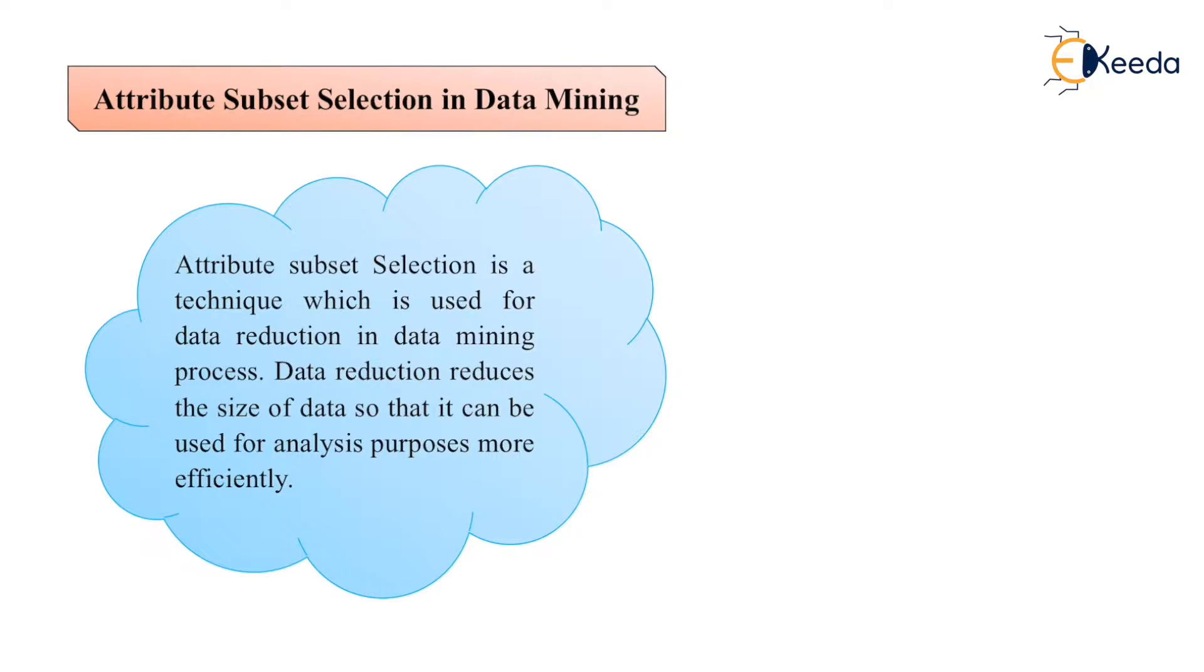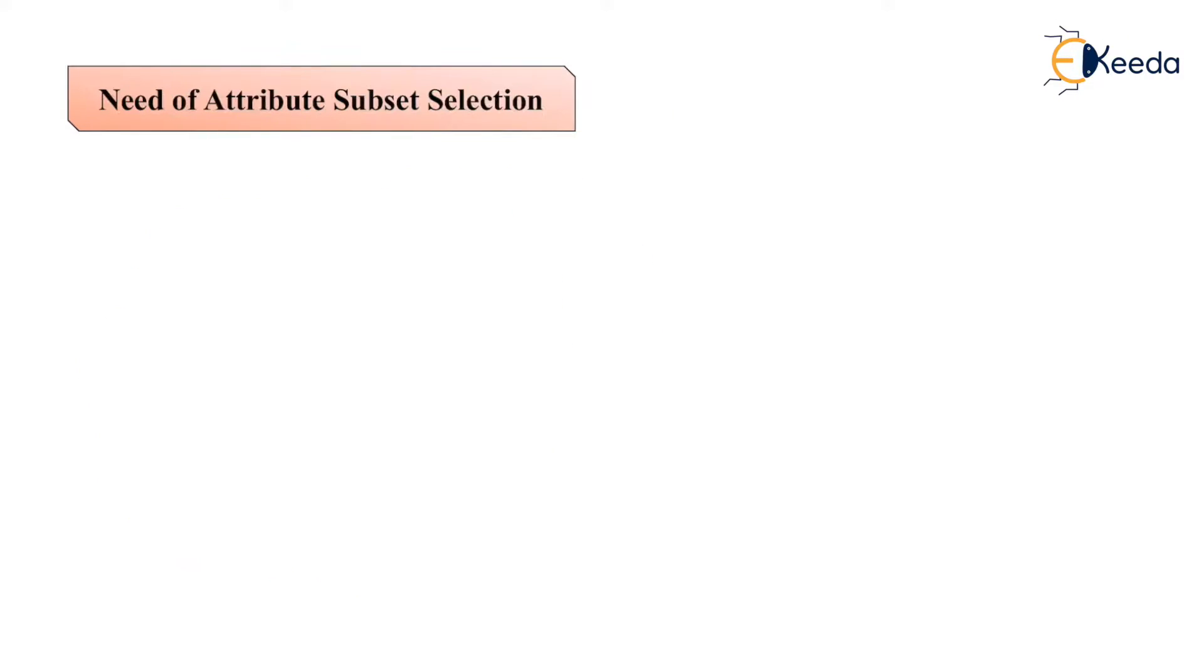Attribute subset selection is a technique which is used for data reduction in a data mining process. Data reduction reduces the size of data so that it can be used for analysis purposes more efficiently.